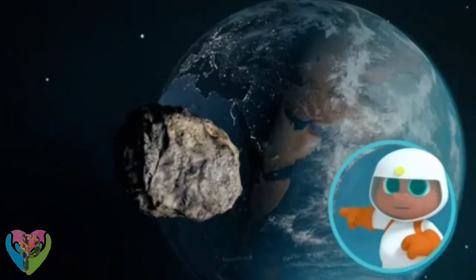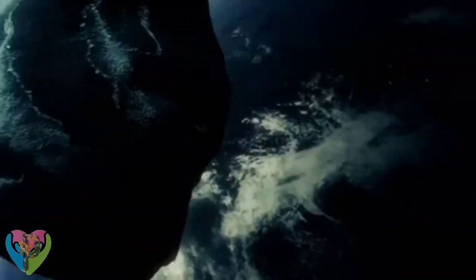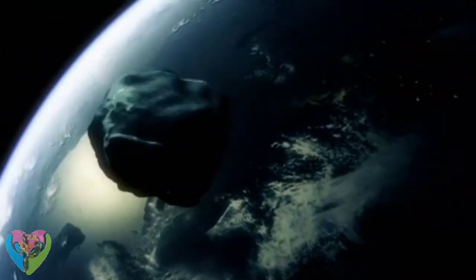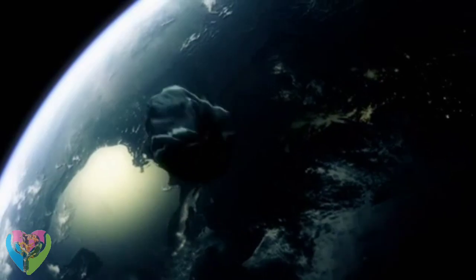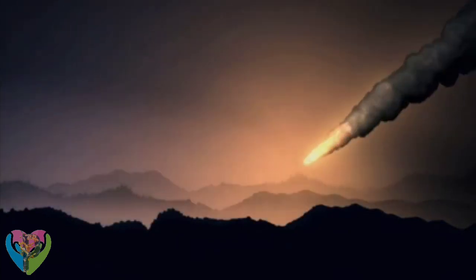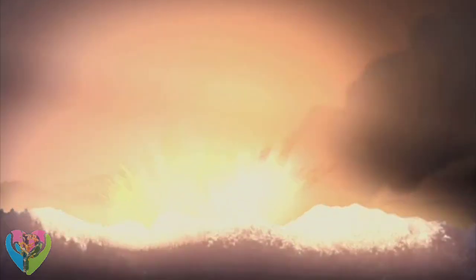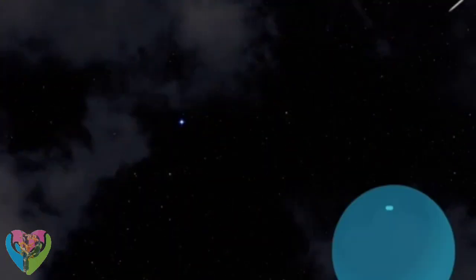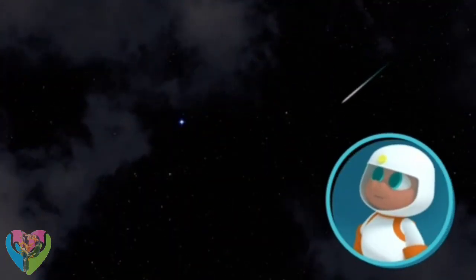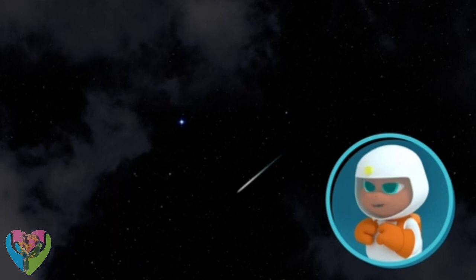It's getting closer! When an asteroid enters the Earth's atmosphere, it's called a meteor. And when a meteor gets even closer, it burns up, leaving a trail of bright light, which people call a shooting star. Oh, look, Corby! There's one now! Oh, wow! It's beautiful!